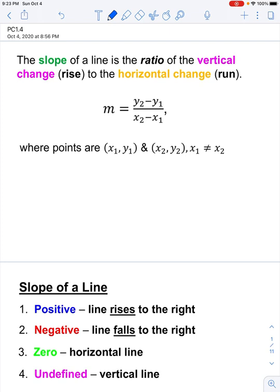Of course, you recall this from both algebra 1 and algebra 2. m is equal to y sub 2 minus y sub 1 over x sub 2 minus x sub 1, where x sub 1, y sub 1, and x sub 2, y sub 2 are the coordinates of two points.